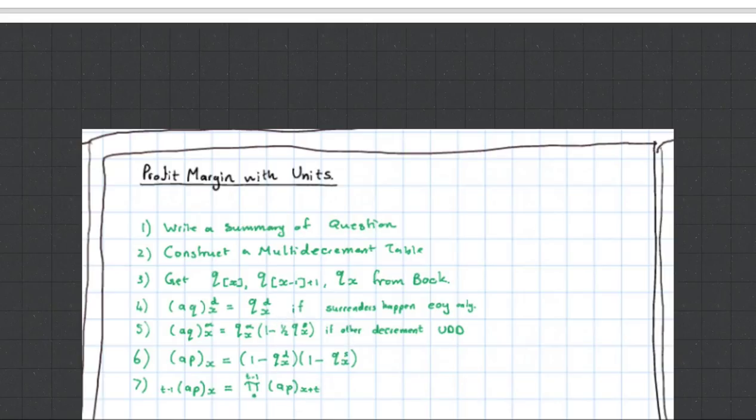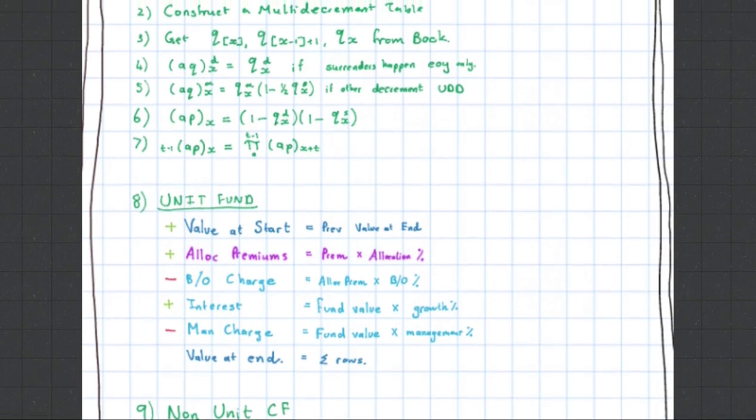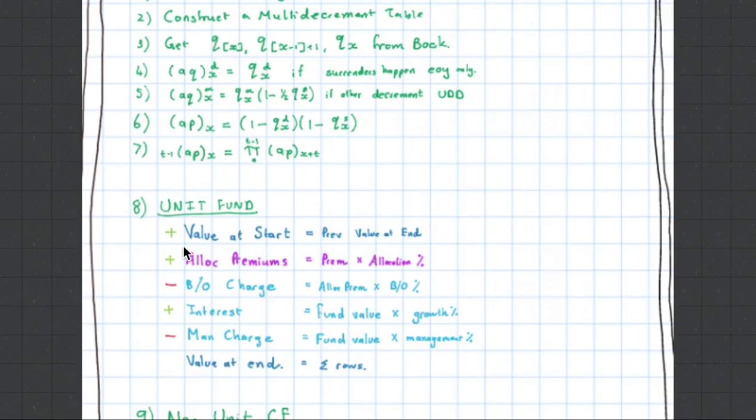Then what you want to do is create two cash flows. This is a bit like accounting. The first one is the unit fund. These will be your rows, and then your columns will be the various years, normally three or four years. Value at the start, plus your allocated premium, less the bid-office spread, add the interest, subtract the management charge. What's your value at the end? Then that comes back to the value of the start for the second year, and you repeat the process. Then you get a little profit vector over there.